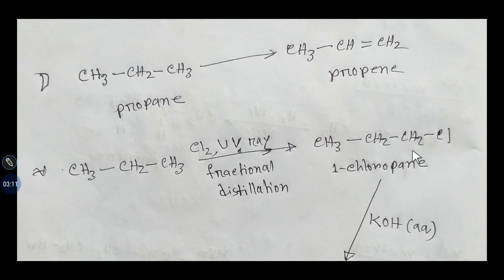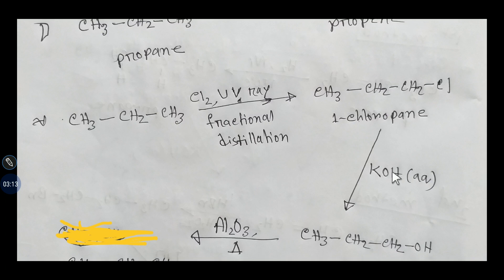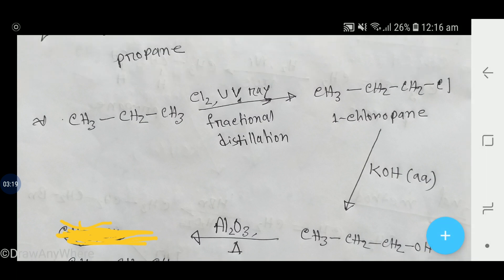So one chloropropane. And now if you add potassium hydroxide, aqueous potassium hydroxide, then this chlorine will be replaced by OH that will come from potassium hydroxide and your compound will be like this. Let me show you.